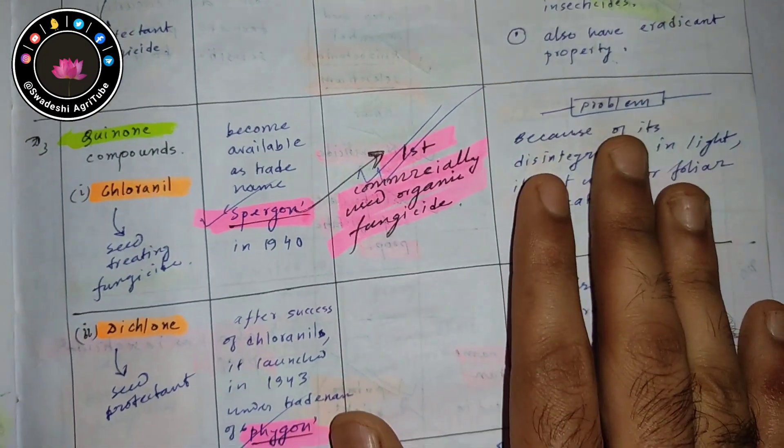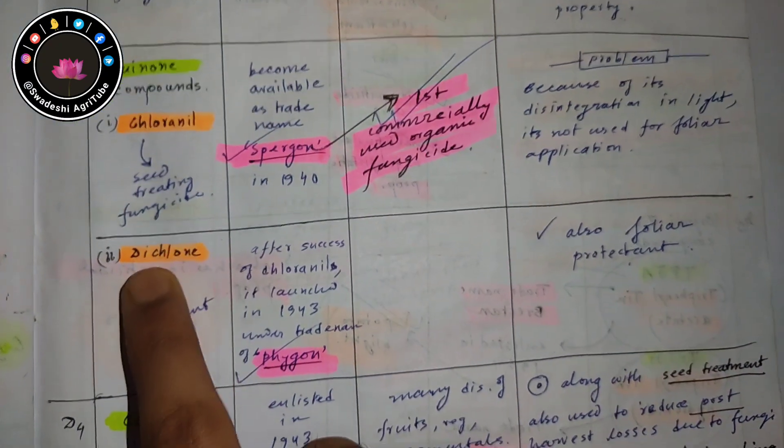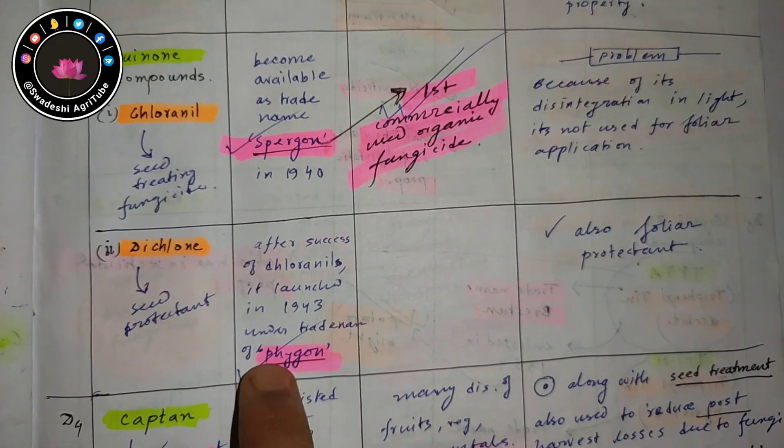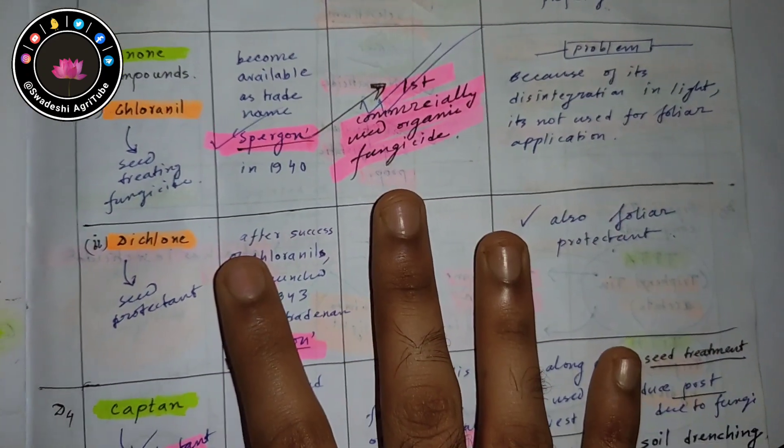If you consider dichlone, the trade name of dichlone is Phygon. There is nothing more needed to remember in this section.